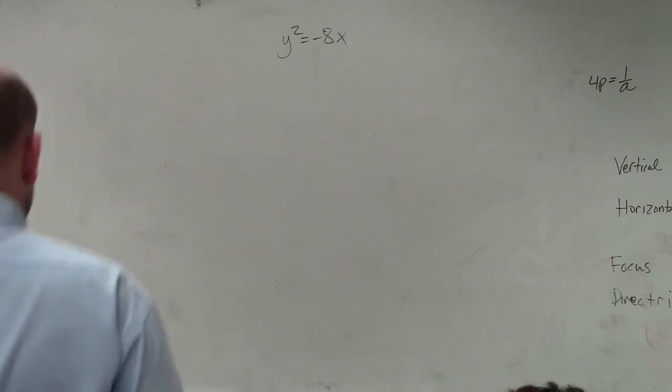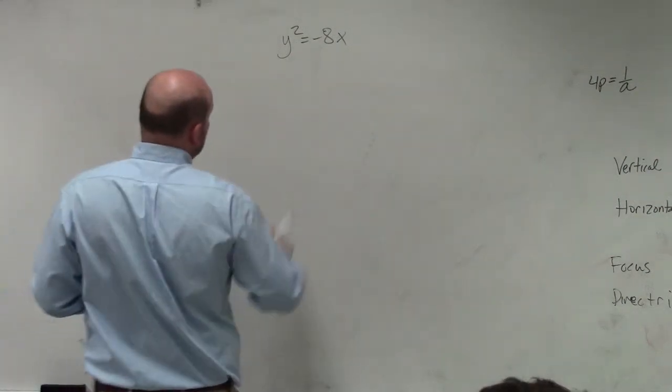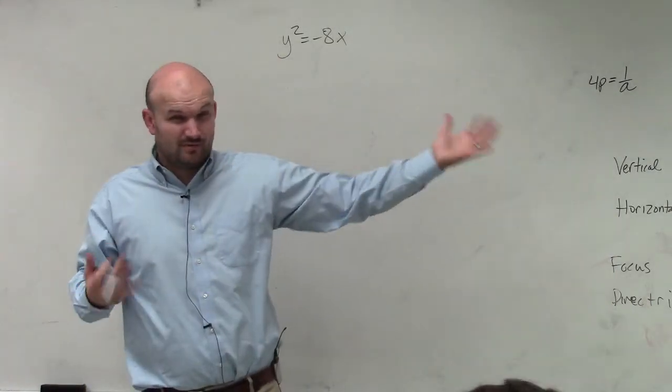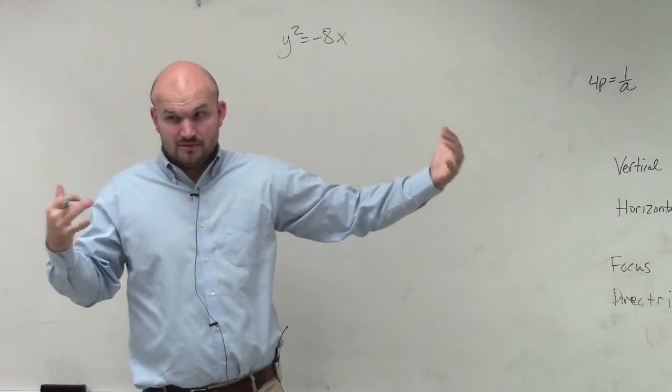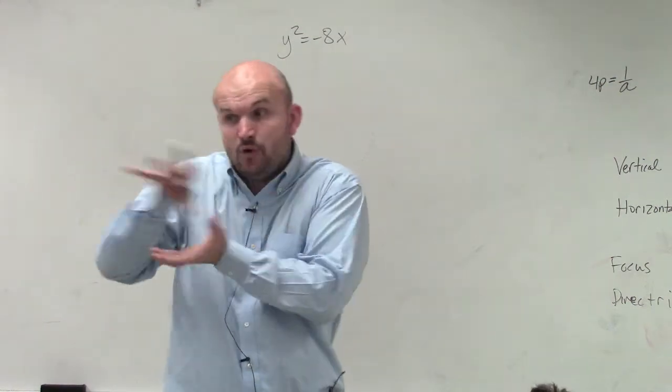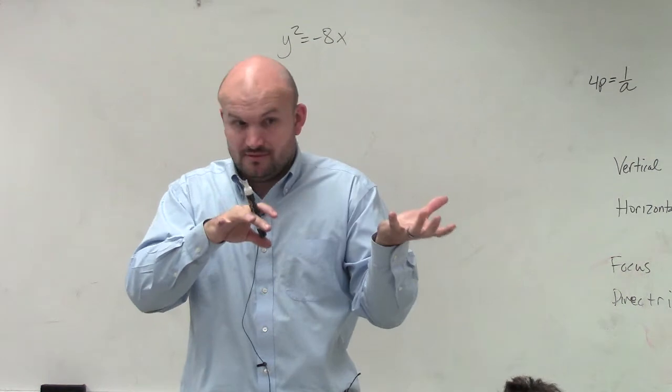The main important thing that you'll need to know how to do is write this into our format. So what is going to be squared here? What is variable squared? y squared. So automatically, I already know, just by looking at that, I know my parabola opens up left or right, correct? You guys can all agree with me on that.